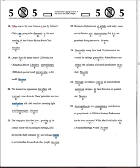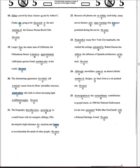Number 22: 'Because cell phones are so widely used today,' there should be a comma — and yes, there is. 'The many movie editors post signs warning that...' — 'it' is supposed to refer to cell phones, but these are phones, not a single cell phone. It's not singular, so 'it' is not allowed. That's choice D.